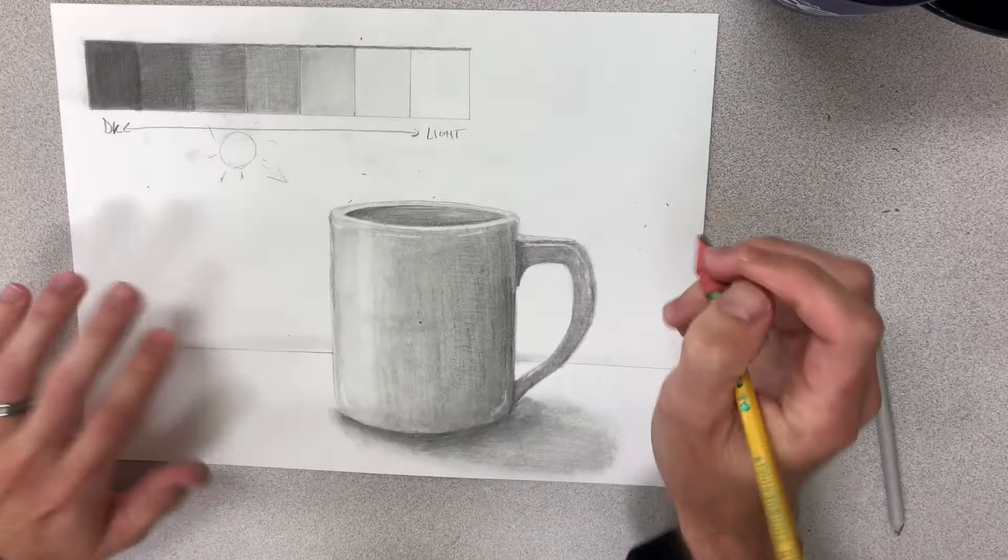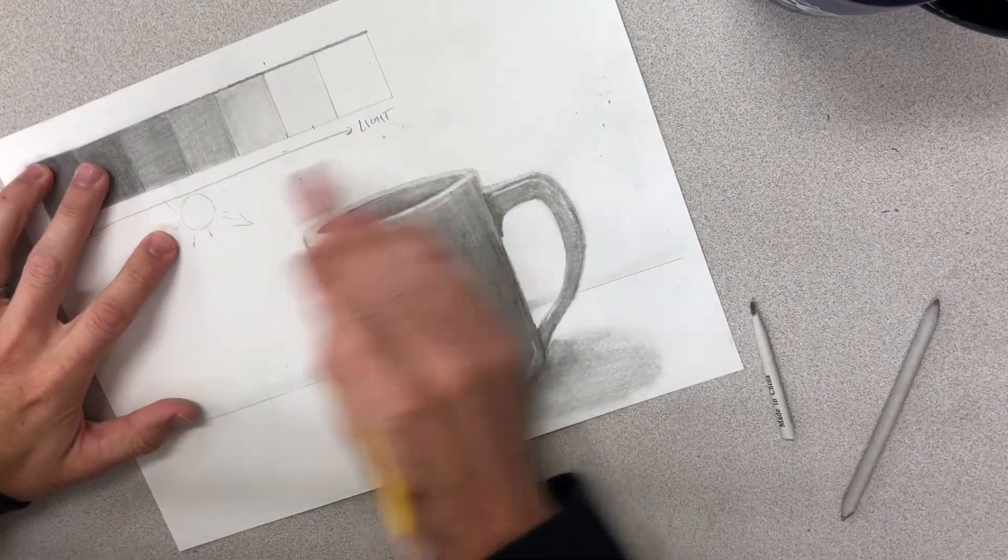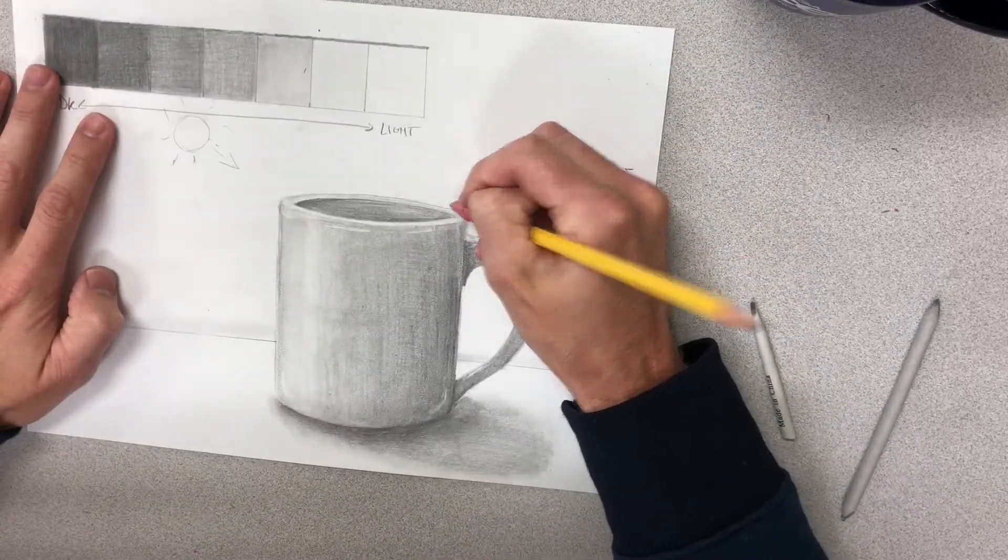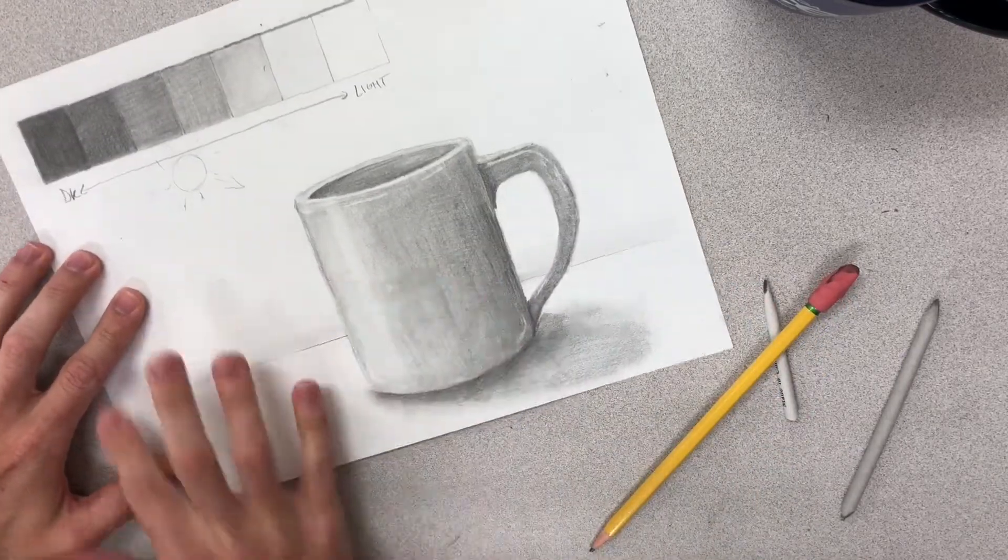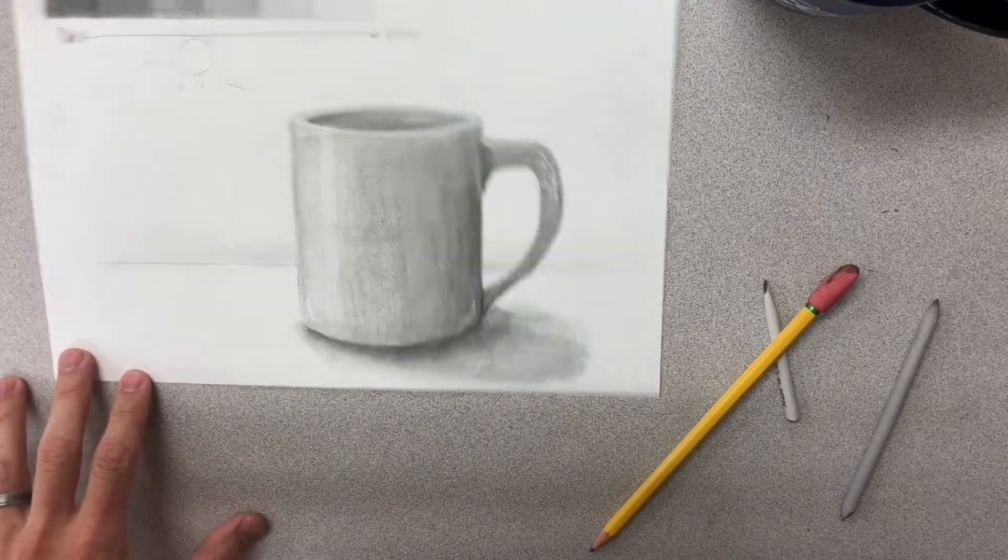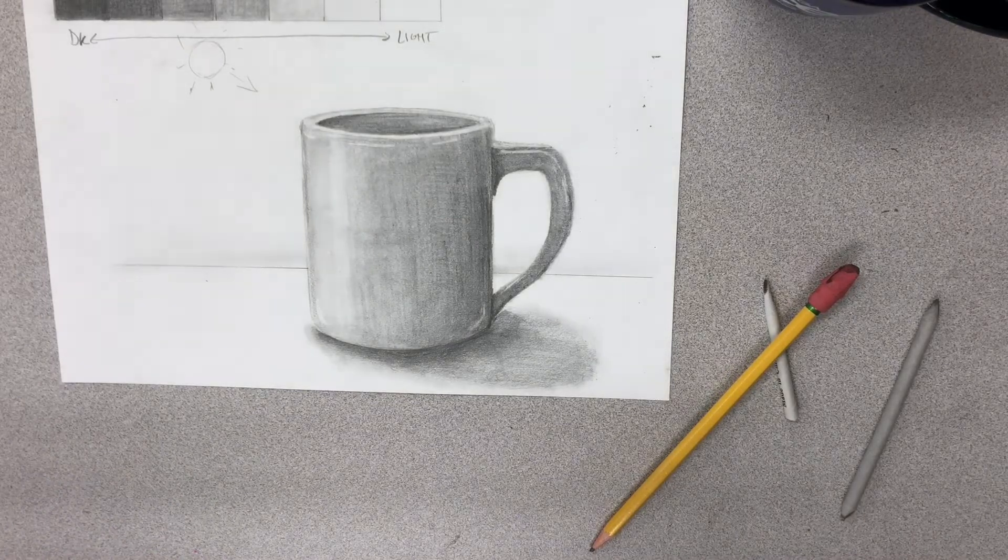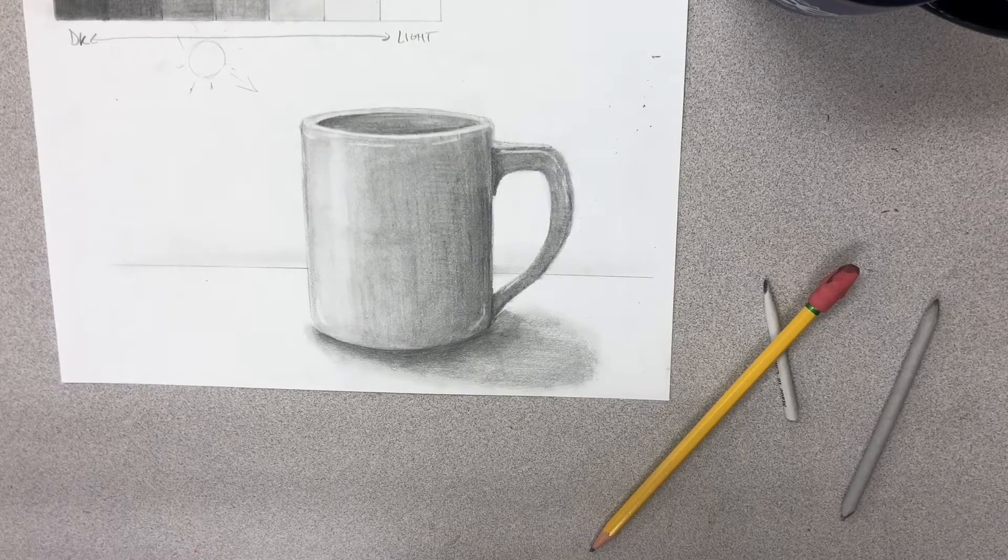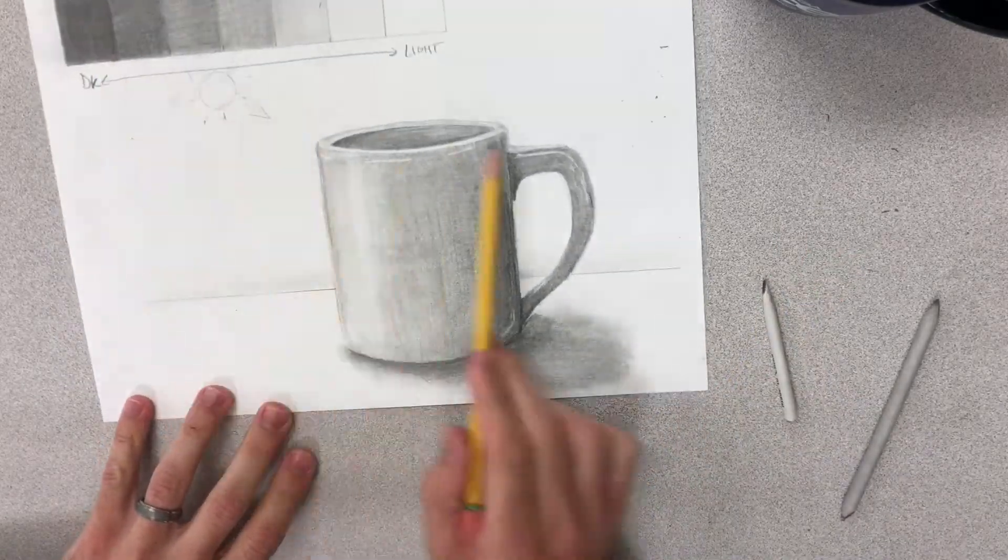Now I'm just looking at the mug and sort of picking up all the different spots. Okay so that was a quick like 10 minute example of what the mug is supposed to look like. Yours will be a lot smoother and hopefully a little more well rendered because you're going to be spending a little bit more time on it.